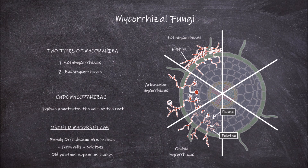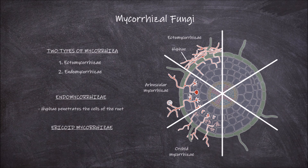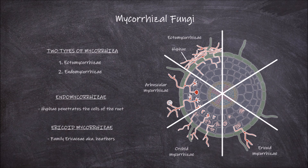Another form of endomycorrhizae is ericoid mycorrhizae. Ericoid mycorrhizae are specifically found between fungi and the roots of plants from the family Ericaceae, which are the heathers. In this type the penetrating hyphae form coils within the cells.